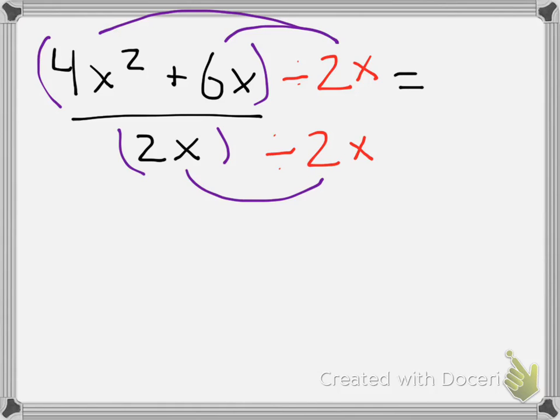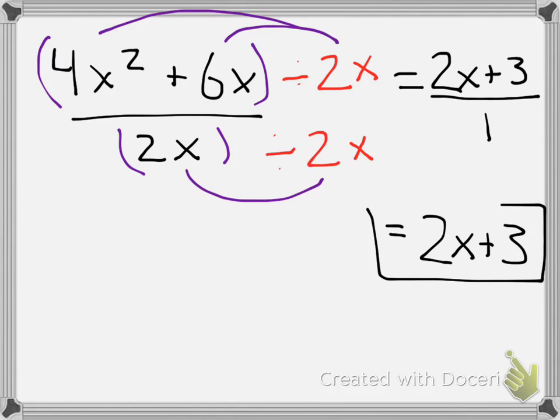4x squared divided by 2x gives me 2x. One of those x's is left over. 6x divided by 2x gives me just 3. And then the denominator, I have 2x divided by 2x gives me 1. So if I even simplified this, I could say an equivalent rational expression would be 2x plus 3, or 2x plus 3 over 1.